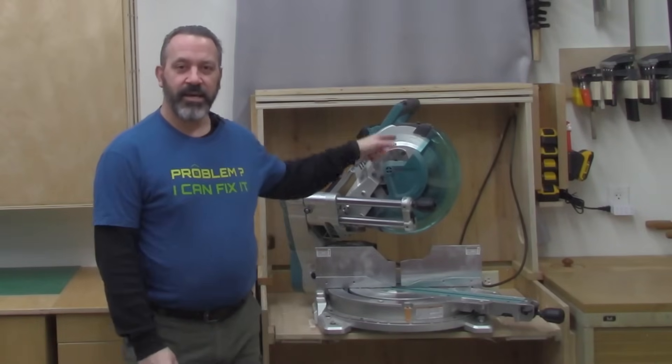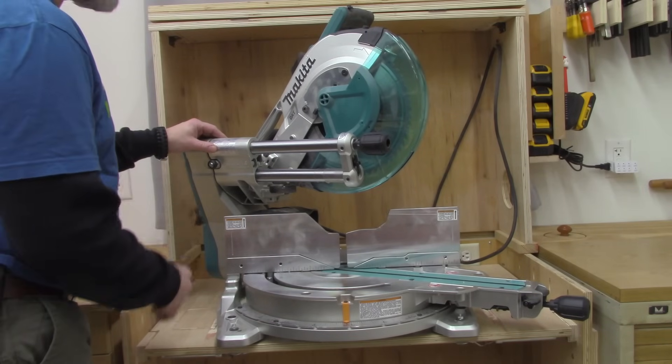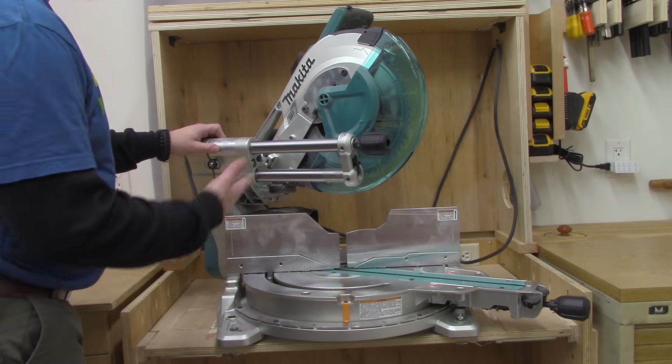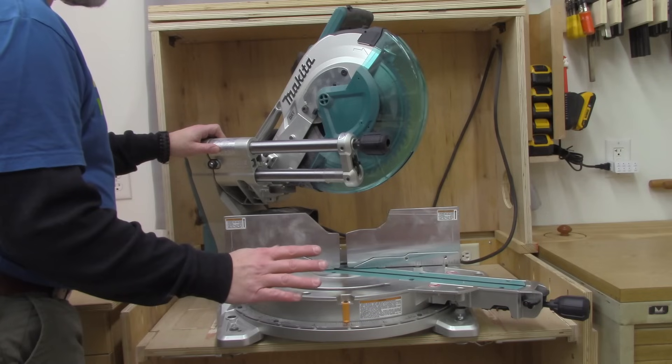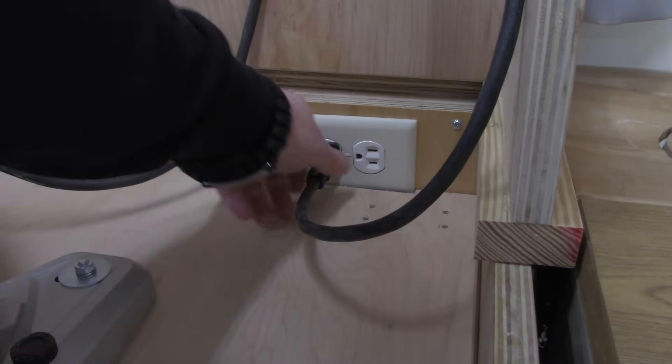Thanks for stopping by. Today, I'm going to show you how to tune up your miter saw. This is my miter saw. It's a Makita 12-inch sliding compound double bevel miter saw. Yours might look a little bit different, might have different colors, but it's okay. Everybody's is a little bit different, but in the end, they all do the same thing. Step one, unplug it.